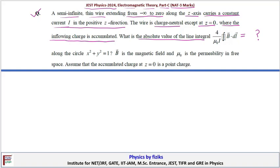Along the circle x squared plus y squared equals one, where B is the magnetic field, mu naught is the permeability in free space, and assume that the accumulated charge at z equals zero is a point charge.